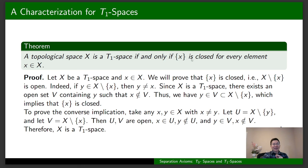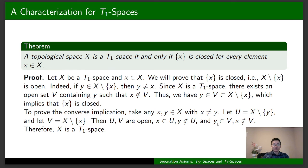To prove the converse implication, we assume that every single-point set in the topological space is closed. Take two distinct elements x and y, and let U be the complement of the single-point set {y}, and let V be the complement of the single-point set {x}. Then U and V are open because they are complements of two closed sets, and every single-point set is closed. x belongs to U because x and y are distinct. y doesn't belong to U by its definition. y belongs to V because y and x are distinct, and x doesn't belong to V. Therefore, X is a T1 space.